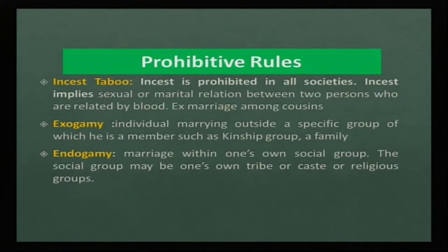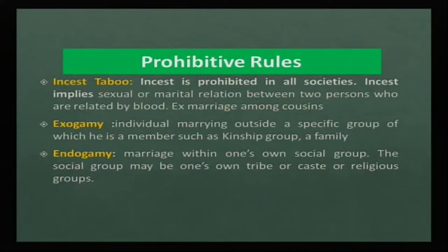Exogamy is when an individual marries outside a specific group of which they are a member, such as a kinship group or family. Endogamy is marriage that happens within one's own social group — the social group may be one's own tribe, caste, or religious group. They may marry in different villages but only within one social group. Caste is an endogamous group where a person from one caste only marries within that particular caste.